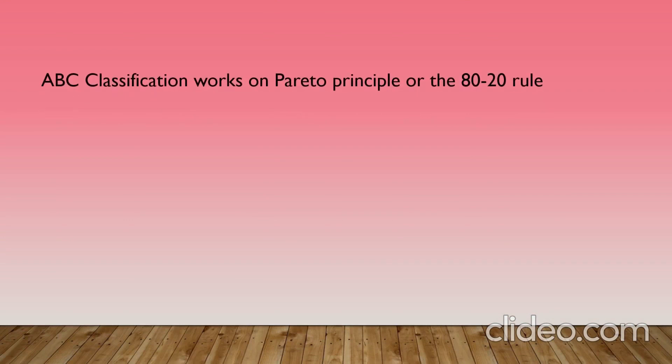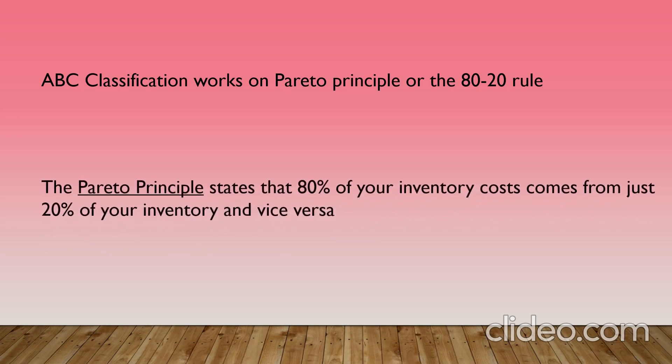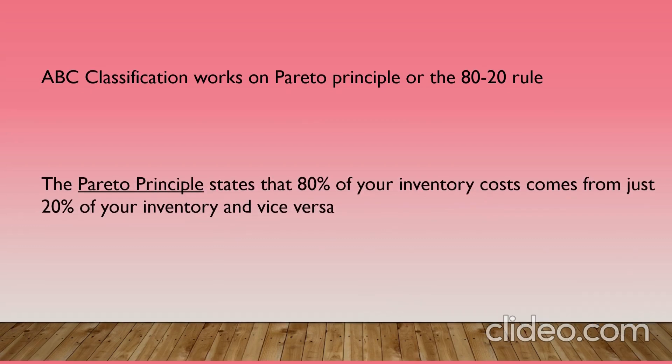ABC classification works on the Pareto principle, or the 80-20 rule. The Pareto principle states that 80% of your inventory costs come from just 20% of your inventory, and vice versa.